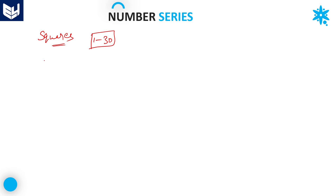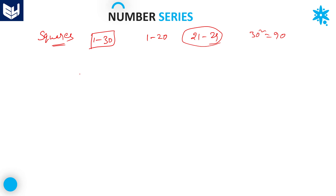Most students know 1 to 20 squares, but don't know how to remember 21 to 29. For 30, you already know that — 30 squared is 900. Now I will tell you how to remember 21 to 29. But before that, I will tell you the shortcut method to remember squares which end in 5.